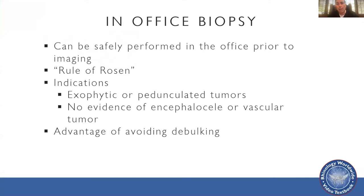For in-office biopsy, I'll often do this if it looks like a fairly safe lesion. The 'Rule of Rosen' is: in the office, I'll use some local on a small needle — 26 or 28 gauge. If there's a significant amount of bleeding when I do the injection, I do not do a biopsy in the office and will take them to the operating room under anesthesia. If there isn't a lot of bleeding with the injection, we proceed with biopsy in the office. This avoids debulking and allows you to come up with a treatment plan without having two anesthetics for the patient.